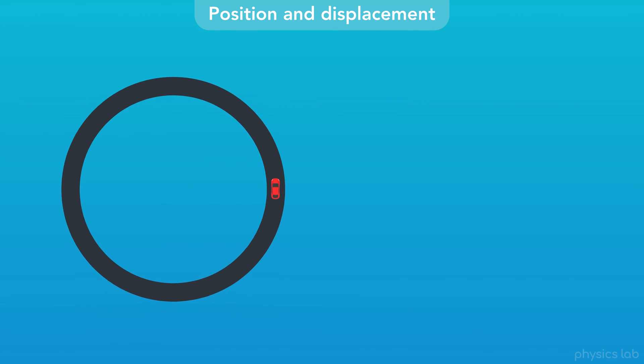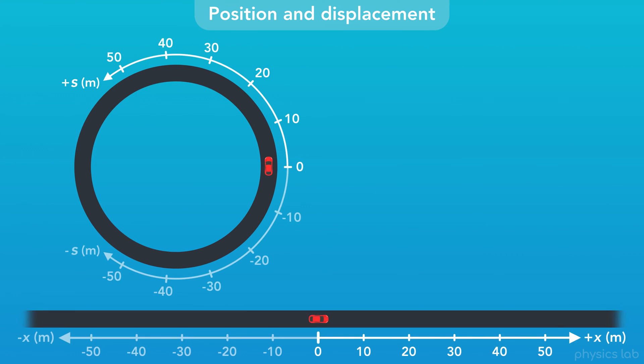But what if the car drives in the other direction? Like with linear motion, we always define a positive and negative direction when we set up an axis. For circular motion, counterclockwise or anticlockwise is considered the positive direction.